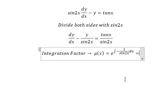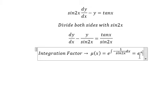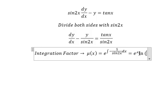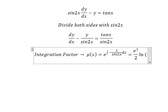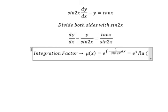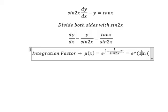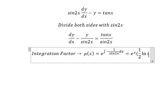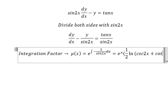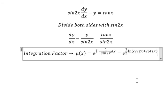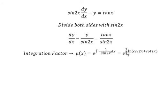This one we will call e to the power of ln, and we have one over two in here. That's the cosecant of 2x plus cotangent 2x. So one over two we can put inside the natural log in here.